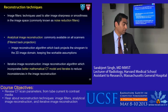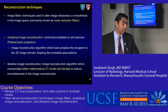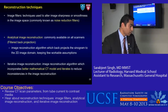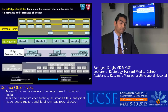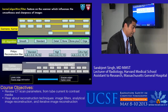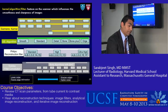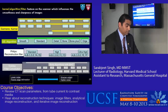Newer iterative image reconstruction techniques incorporate better mathematical CT models and iterate in loops to reduce inconsistencies in image reconstruction. Another scanner feature is the kernel, commonly known as algorithms or filters. This feature influences the smoothness or sharpness of the image and is typically applied before the image is reconstructed. Siemens has a set of kernels, GE calls them algorithms, and Philips calls them reconstruction filters.